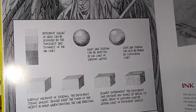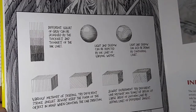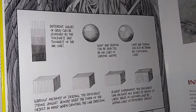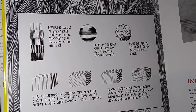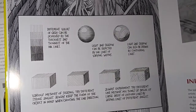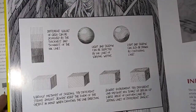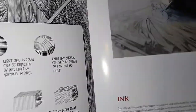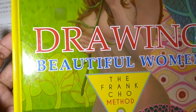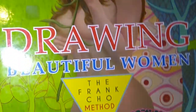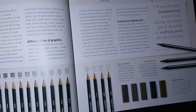I'll also be explaining terms you'll be hearing. If you're absolutely new to drawing, 'values' is basically the different levels of darkness and lightness that you can create with lines.